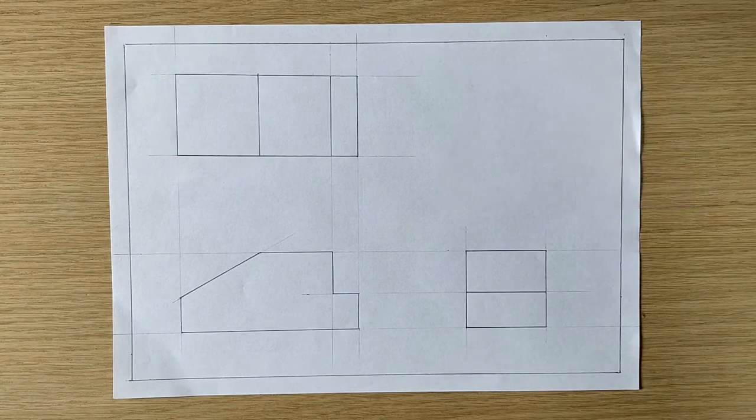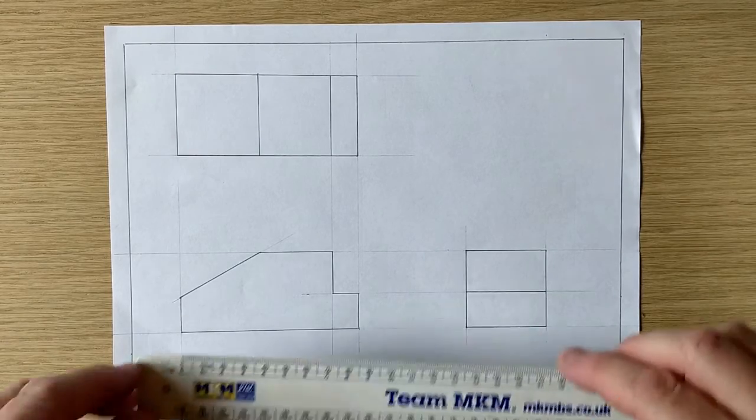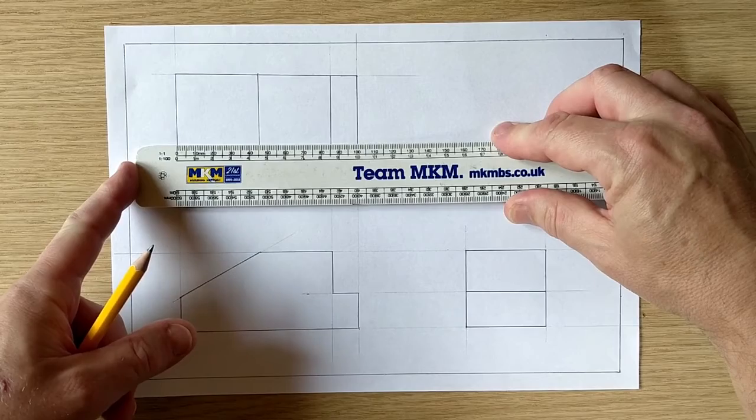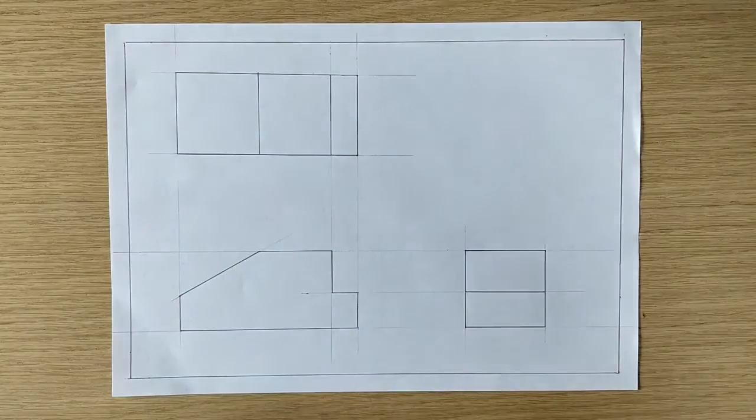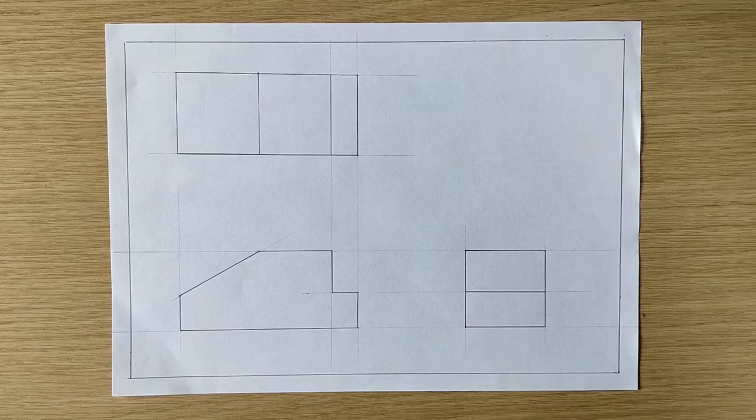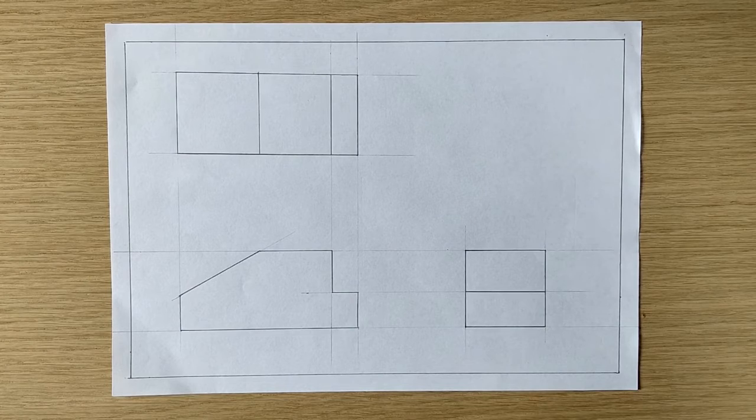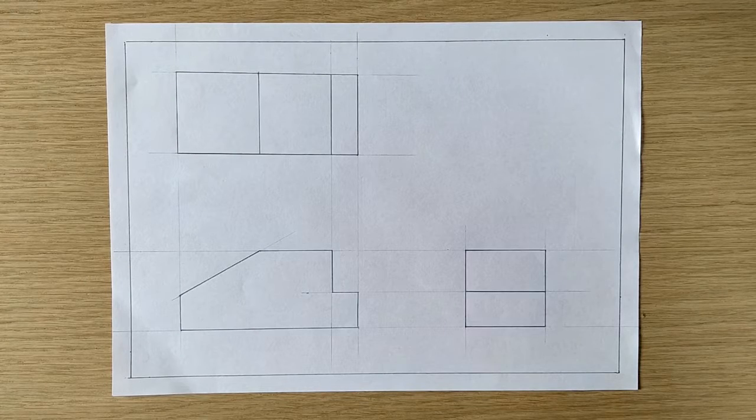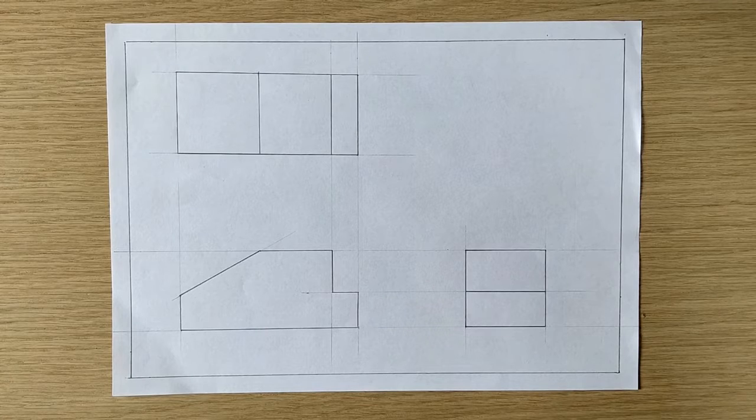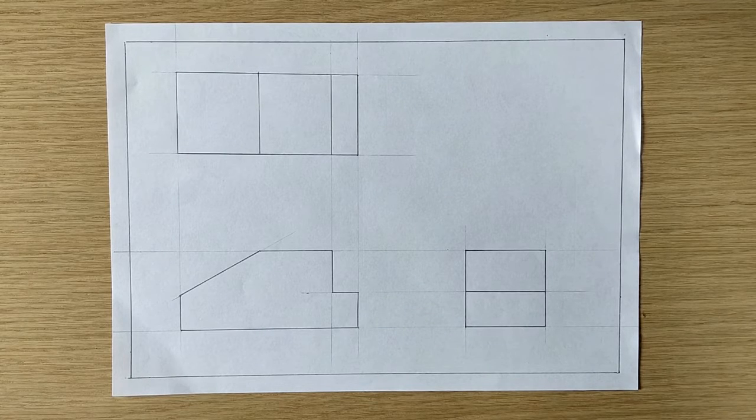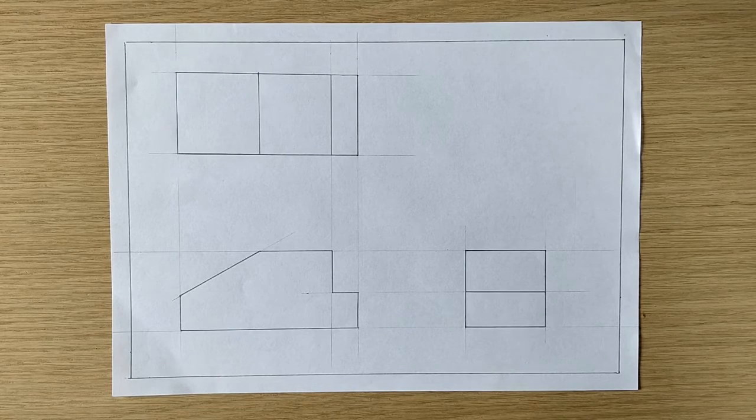The reason we do this is if we wanted to get this block made, you don't want the manufacturer measuring your drawing. If that drawing's been photocopied then it may well not be the right size anymore and there's no way of knowing other than to put written dimensions or measurements on the drawing. Now we have to do that in a particular way because it's very important that the same method and the same standard is used by everybody so everyone can understand exactly what is meant.